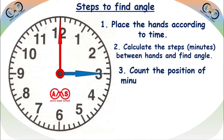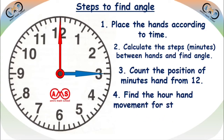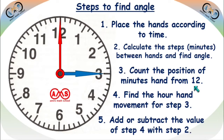Step 3: count the position of the minute hand from 12. Here, at 3 o'clock, the minute hand is at 12, so there is no movement of the minute hand from 12 in this case. Step 4: find the hour hand movement corresponding to Step 3. When the minute hand moves from 12, the hour hand also moves forward. Step 5: add or subtract the value of Step 4 from Step 2. If the hour hand goes farther from the minute hand, add. If the hour hand goes closer to the minute hand, subtract.